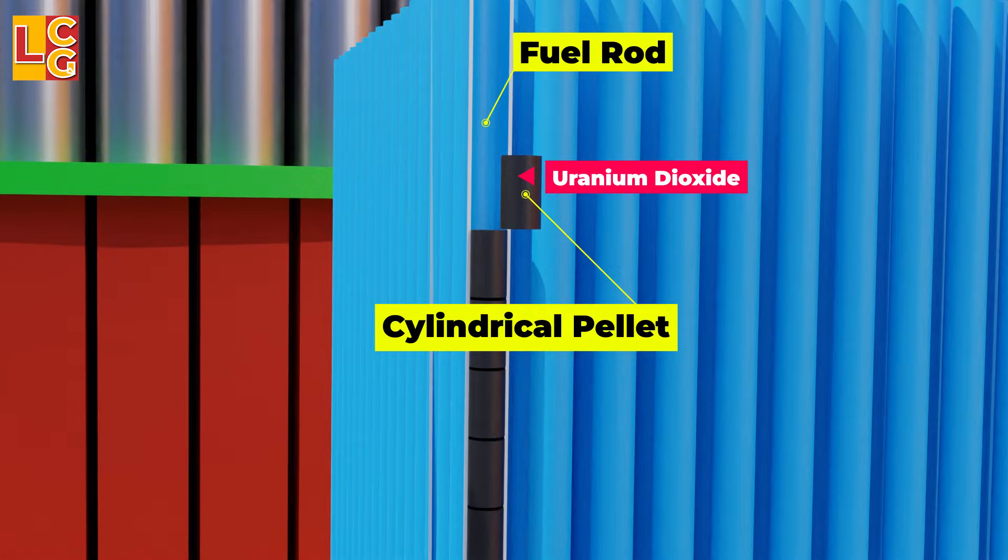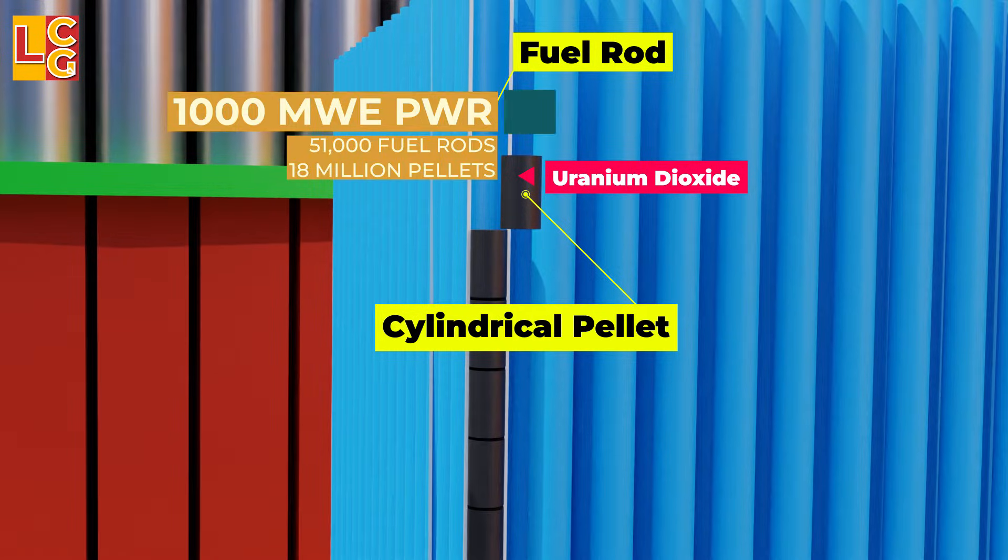In a pressurized water reactor with 1,000 megawatts electric, there are about 51,000 fuel rods with over 18 million pellets.